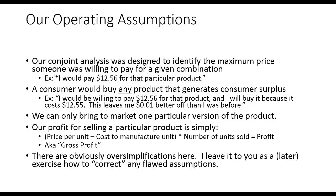We also assume we could only bring one version of this product to market. There were 12 different iterations of the NoKey lock to choose from. We're also assuming a simple gross profit formula: price per unit minus cost of manufacturing, multiplied by the number of units sold. Fixed costs and variable manufacturing costs are ignored for now.